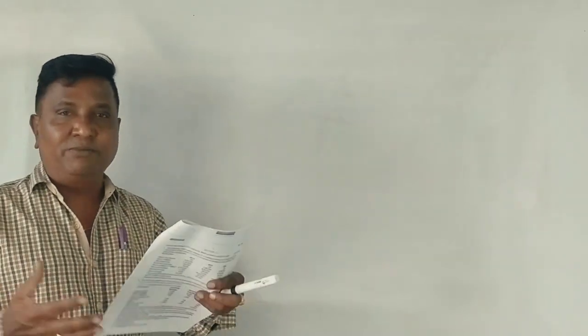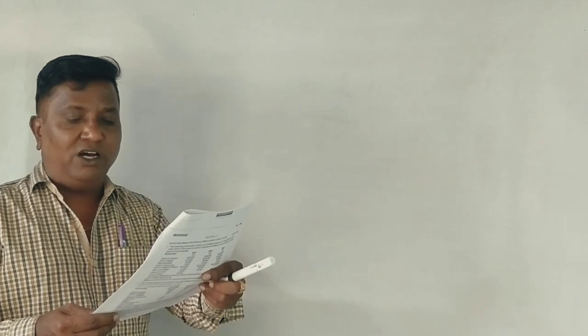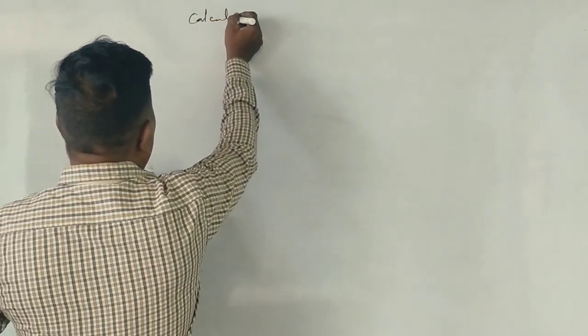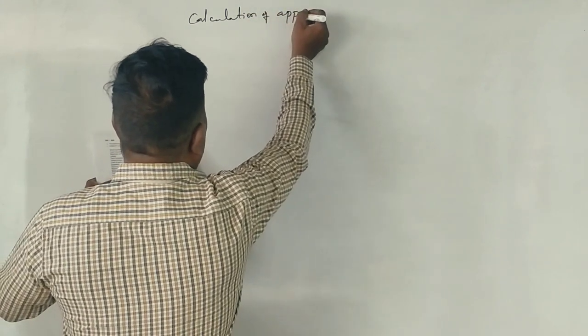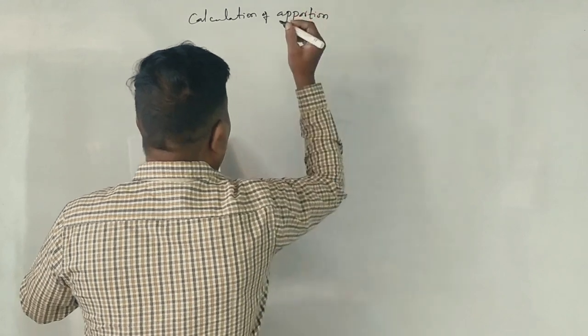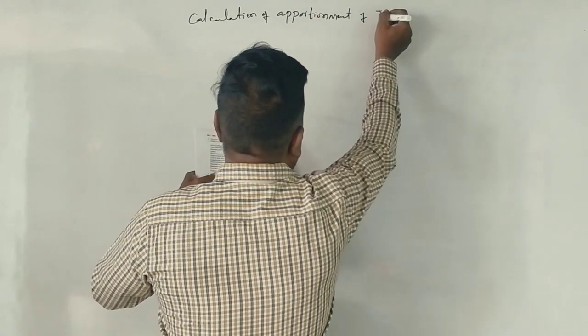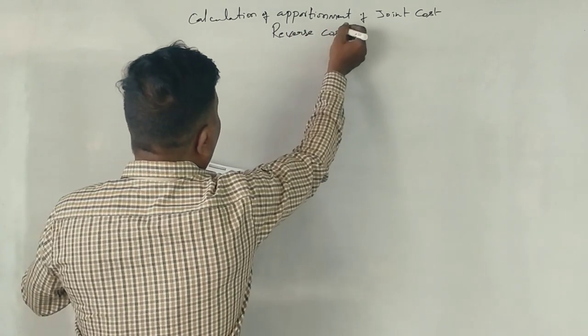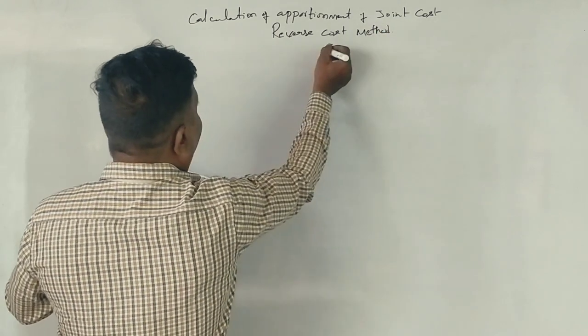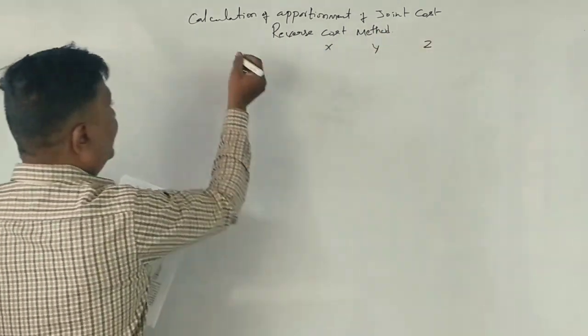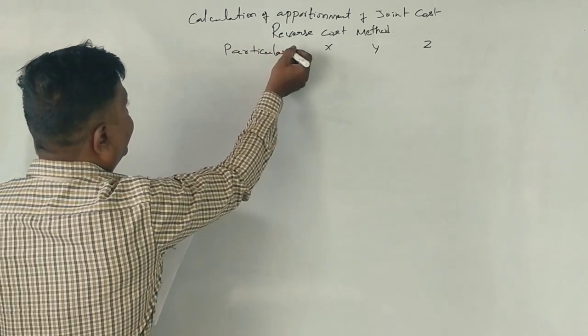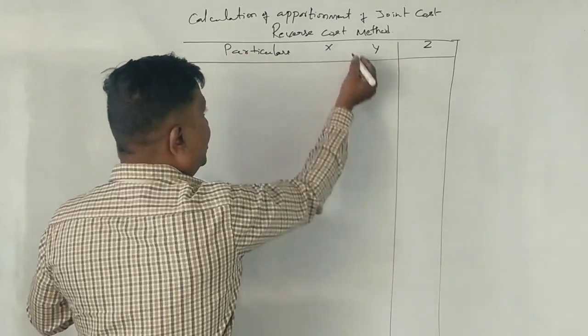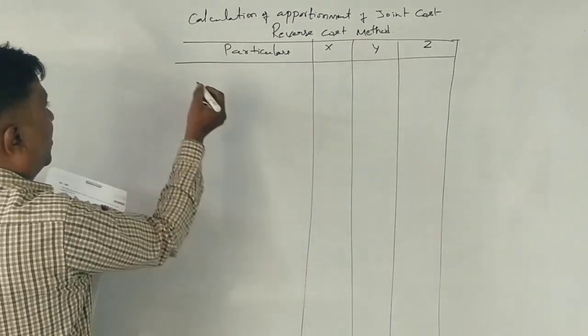Now, we have to do this in a reverse cost method. So, how would you apportion the joint cost of manufactured by reverse cost method? Reverse cost means first sales, that means profit minus. First of all, sales.